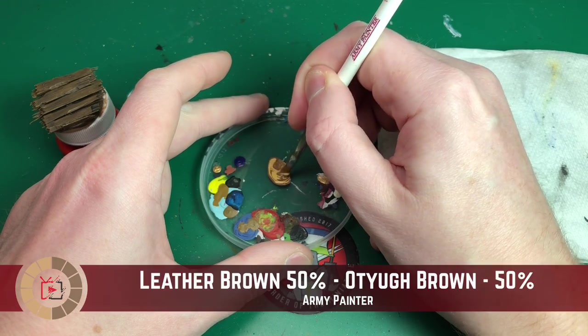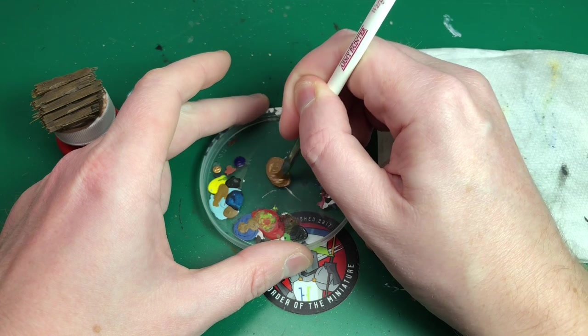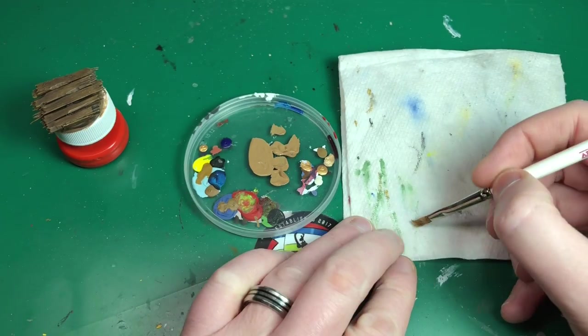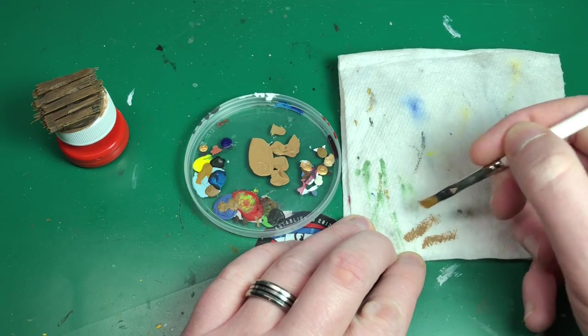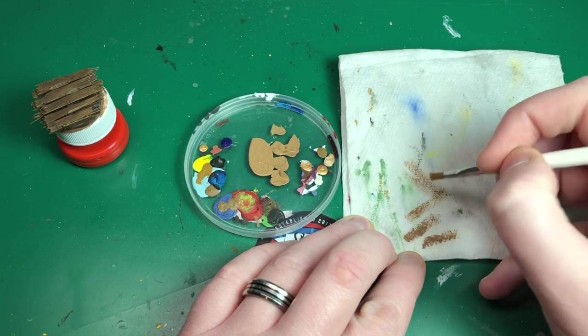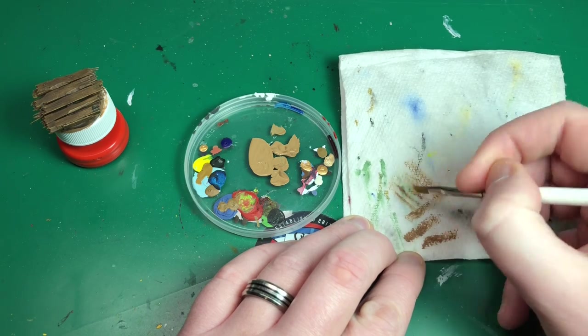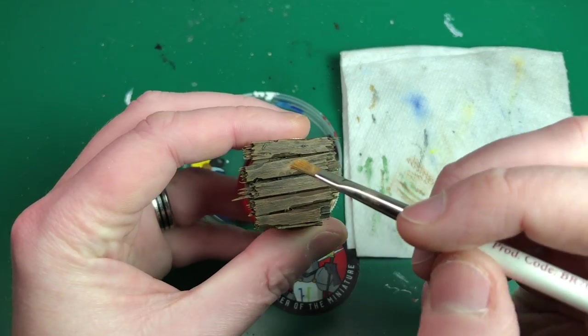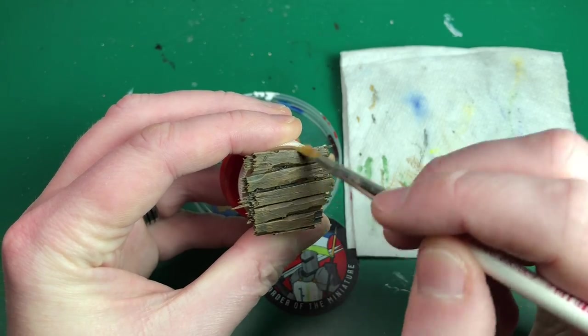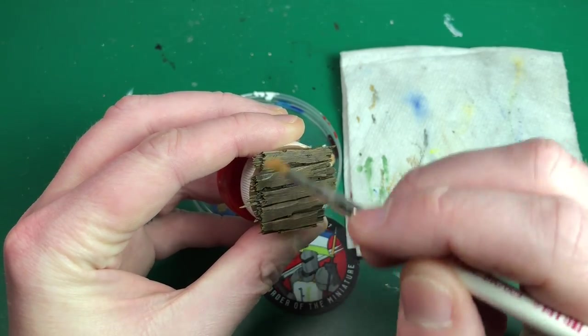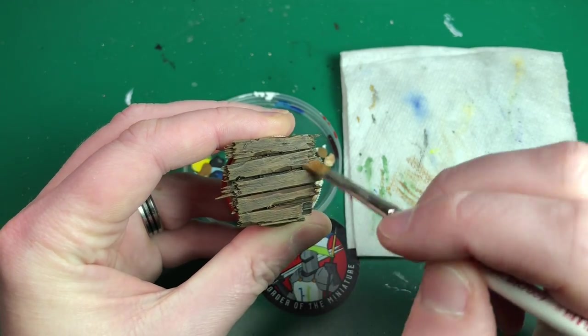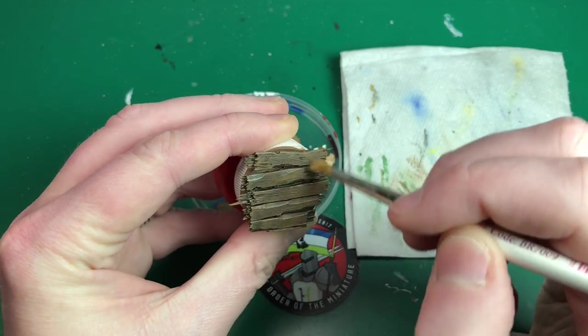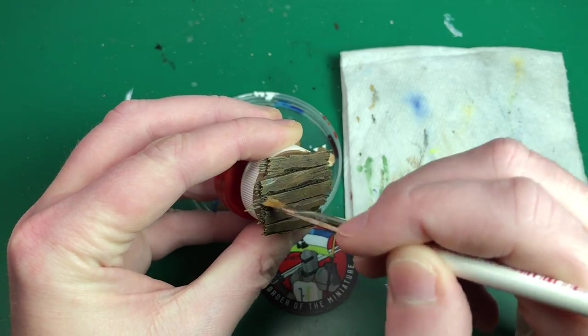I'm taking Leather Brown and Ochia Brown, mixing that about 50-50 getting a slightly lighter look. We're going to be dry brushing so I'm taking off as much paint as I can, leaving a very slight amount on the brush. I'm going to lightly catch that along all of the planks, highlighting the protruding parts and raised bits.